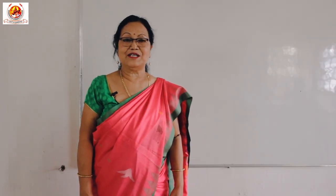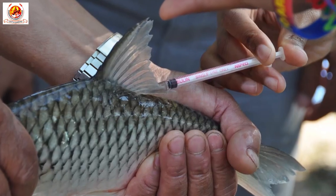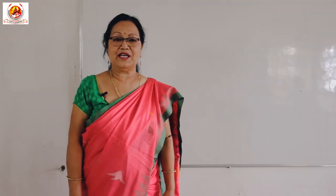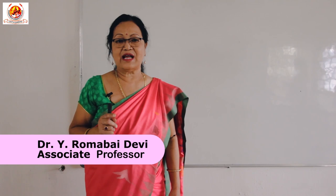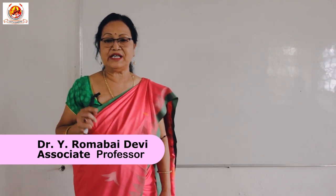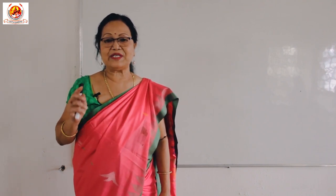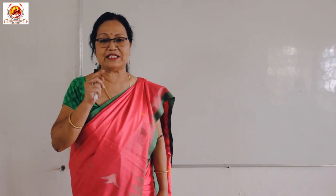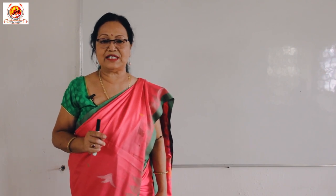Hello students, today I'm going to deliver an interesting topic about induced breeding or hypophysation in fishes. Induced breeding is a technique whereby ripe fish breeders are stimulated by pituitary hormone injection to breed in captivity. The stimulation promotes a timely release of sperm and eggs from ripe gametes. So spawning in fishes induced by some artificial breeding stimuli may be called induced breeding or hypophysation.